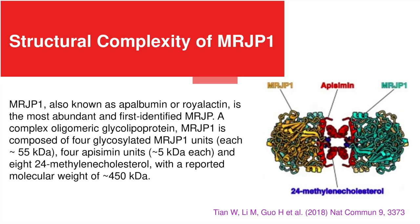Major royal jelly protein 1, also known as apalbumin or royalactin, is the most abundant and first identified major royal jelly protein. It is a complex oligomeric glycoprotein composed of four glycosylated MRJP1 units, each around 55 kilodaltons.